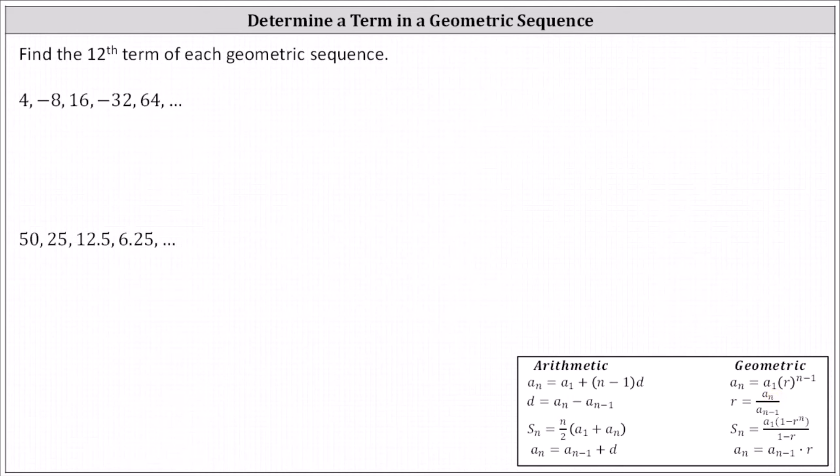For the first sequence, a sub one, the first term, equals four. Let's determine the common ratio r using the first two terms. The common ratio r must be equal to a sub two divided by a sub one, which is negative eight divided by four, which equals negative two.